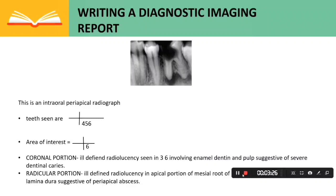The radicular portion shows ill-defined radiolucency in the apical portion of the mesial root of tooth 36, with breakage in continuity of the lamina dura, suggestive of periapical abscess.